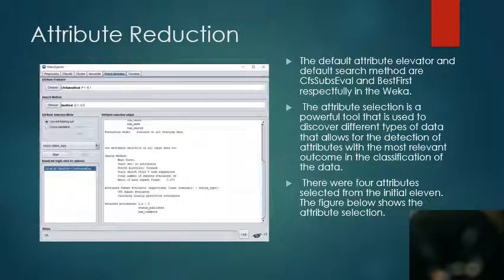I also did some attribute reduction, and the default attribute evaluator was used. I reduced the attributes to four attributes, and then I tried to do the classification with the four attributes and also with all the 11 attributes that remained.